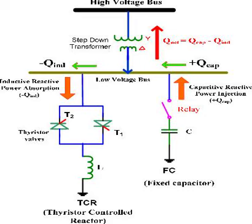Transmission line compensation: Long transmission lines can cause voltage drops due to the impedance of the line. An SVC placed strategically along the transmission line can help compensate for these voltage drops and maintain proper voltage levels at load centers.